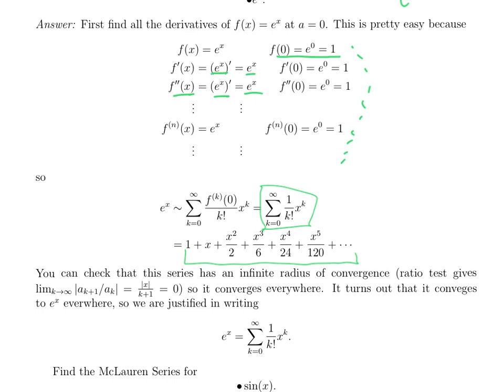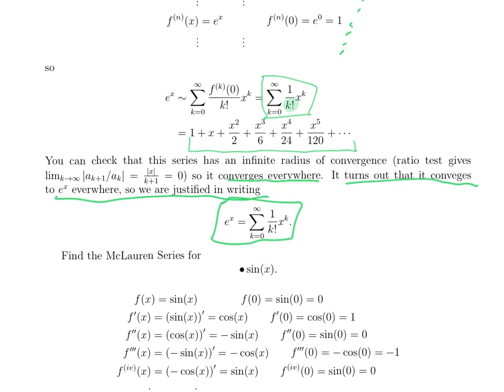It is not hard to check that this series, x to the k over k factorial has an infinite radius of convergence. You can guess that, because the k factorial in the denominator makes the whole series converge, regardless of x. So the series converges everywhere, and it turns out that it converges to e to the x everywhere. That is to say that for any value of x, the sum of 1 over k factorial x to the k, an infinite sum of numbers adds up to the number e to the x.